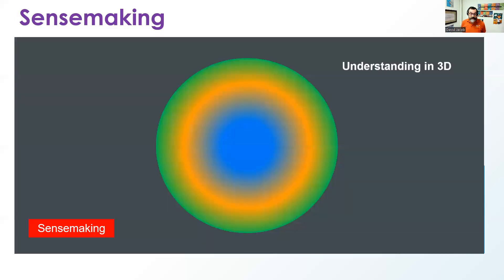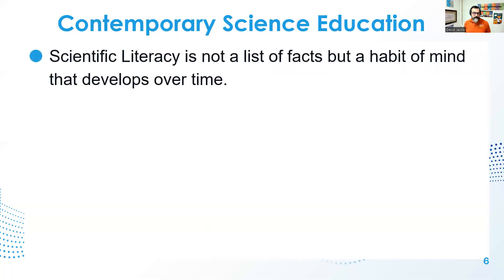This sense-making is what we think about as understanding in three dimensions: the science and engineering practices, the cross-cutting concepts, and the disciplinary core ideas. So when we think about contemporary science education, scientific literacy is not just a matter of listing facts or naming Newton's laws, but it's really a habit of mind that develops over time — the ability to use science and engineering practices interchangeably to figure out a problem. It's not a scientific method that goes from one to two to three, but rather a habit of mind of how we figure problems out, including using patterns, cause and effect, scale, proportion and quantity, or stability and change to understand the disciplinary core ideas.